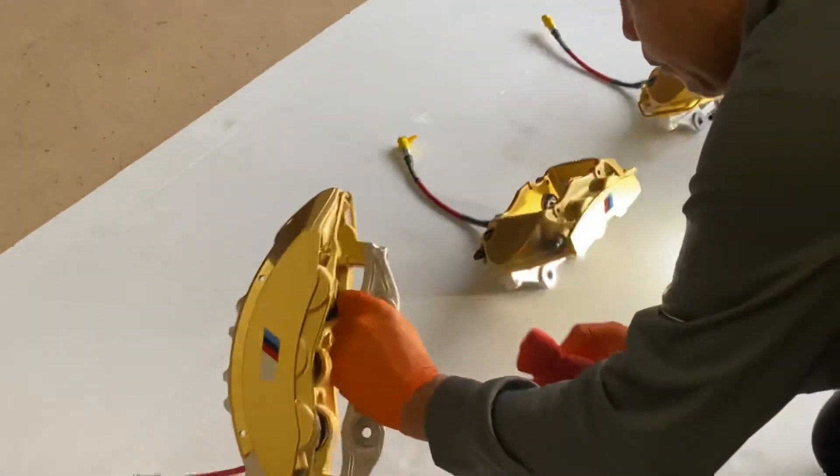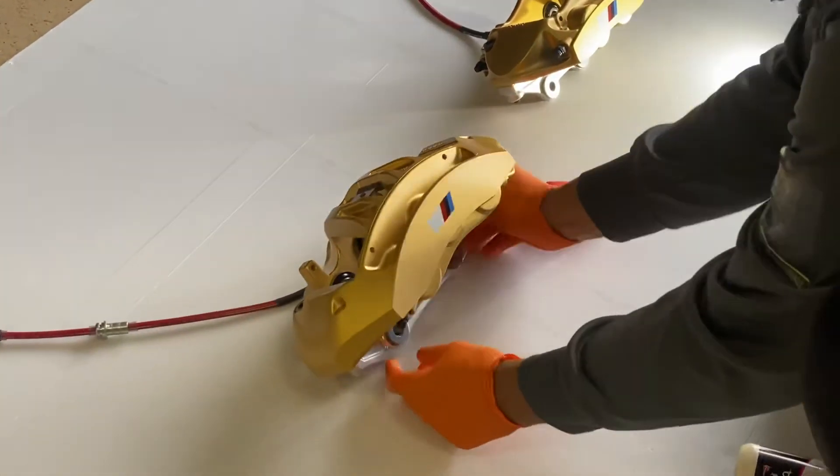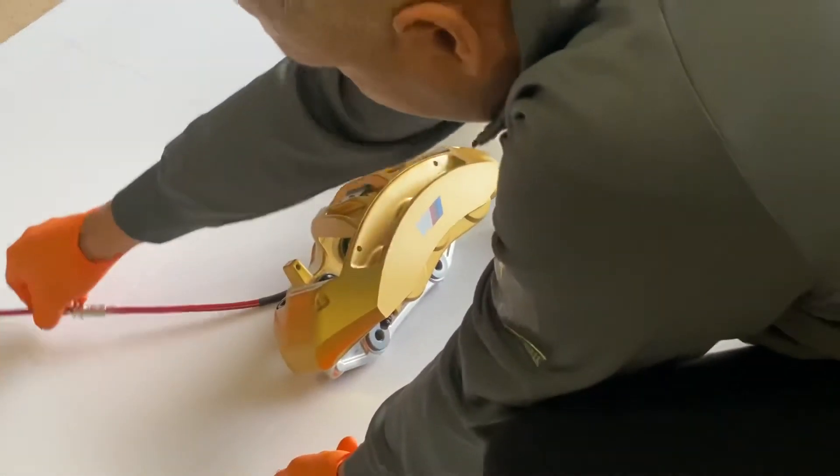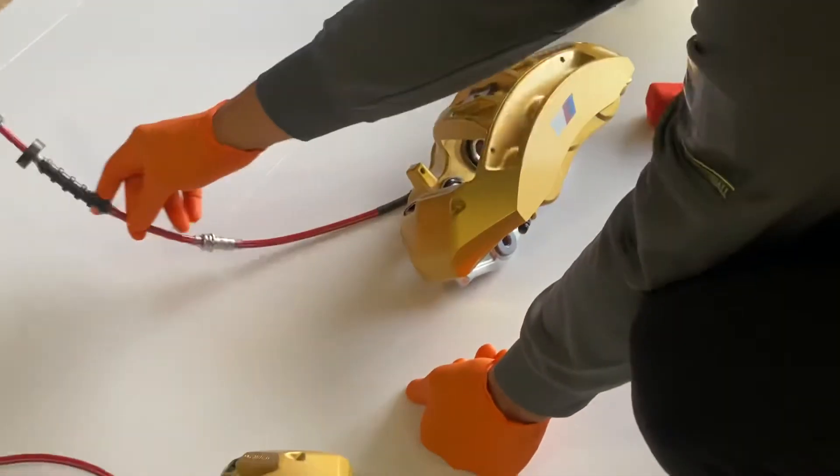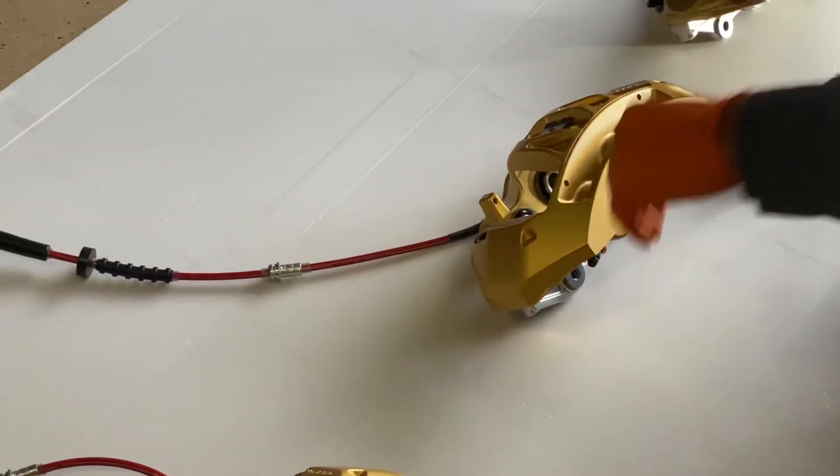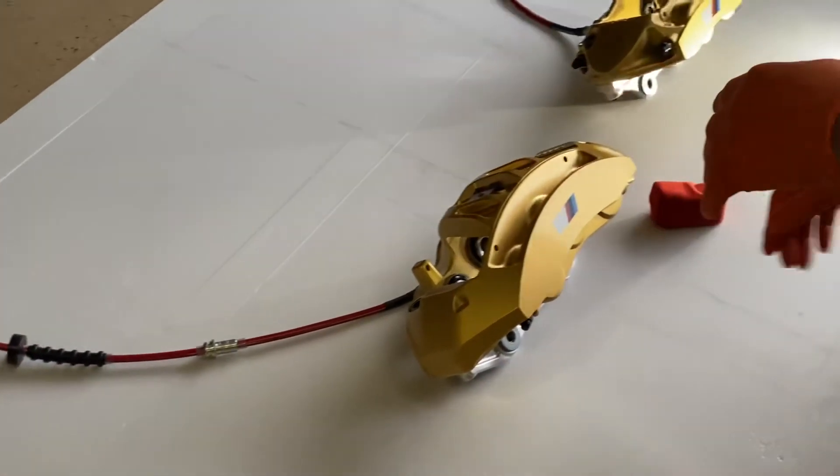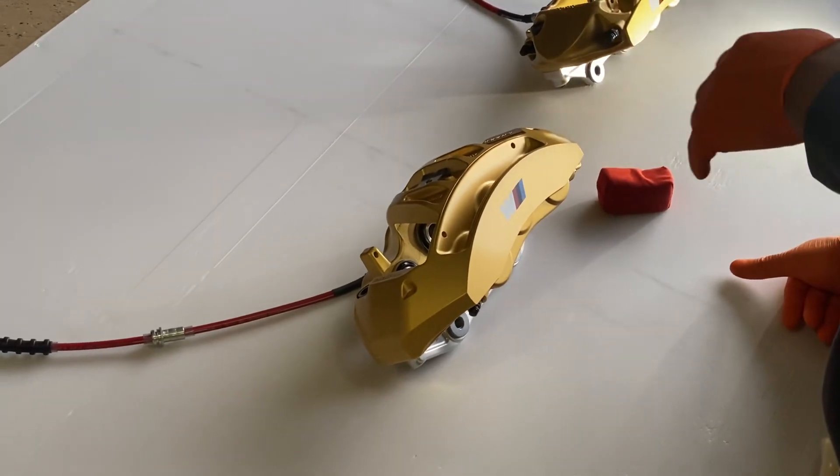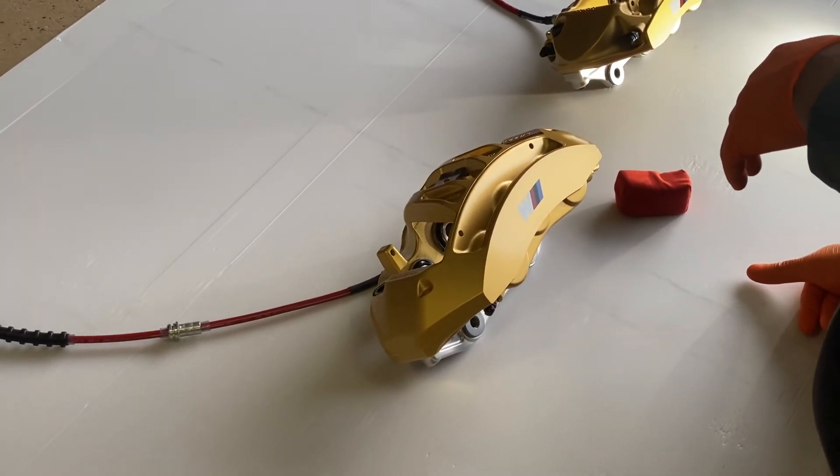Another thing I'm going with is I'm changing the brake lines. I'm going with the braided line from ECS Tuning. These are the red ones from ECS Tuning. I'm getting rid of the factory lines and going with these.